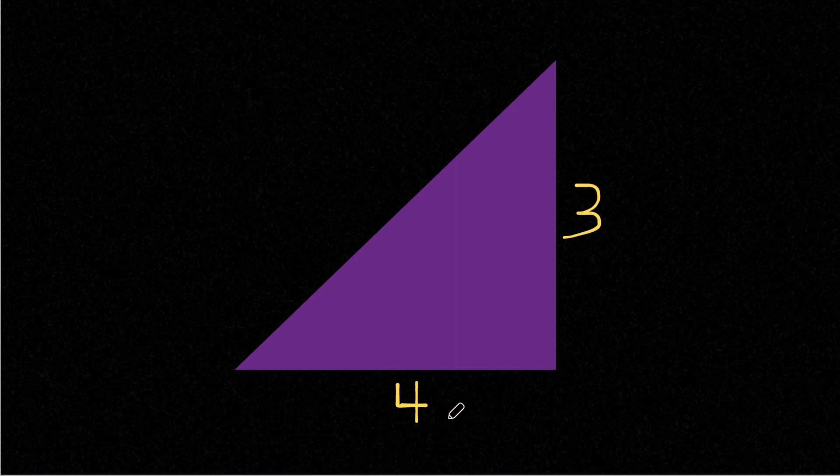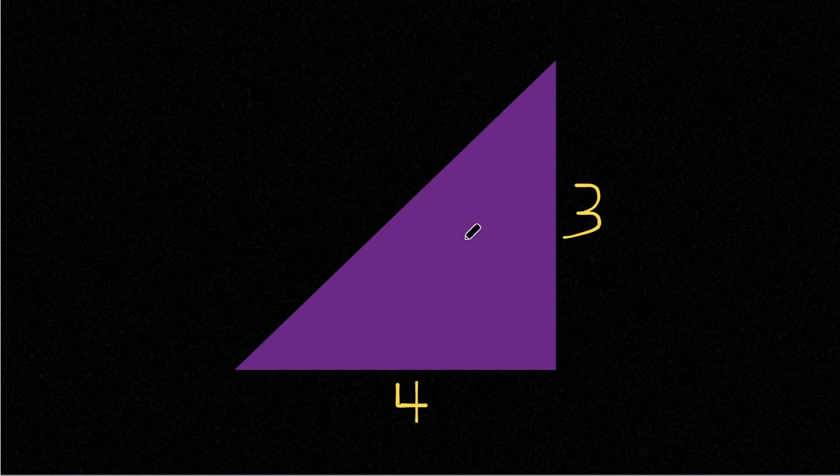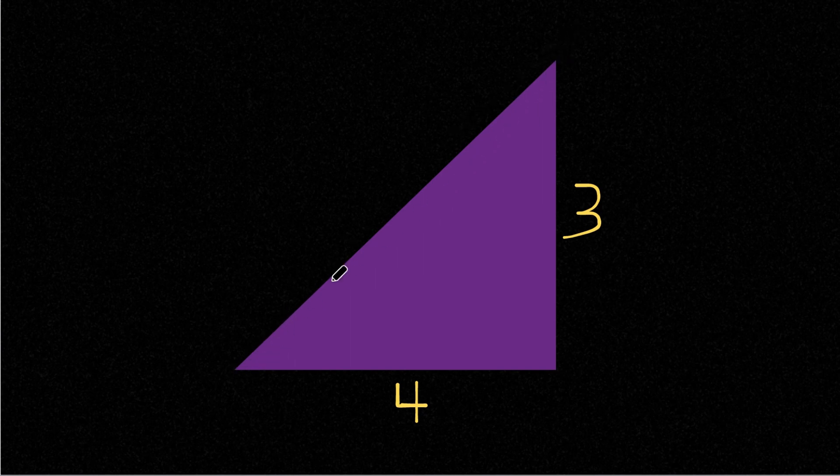As you can see here, we have our right triangle and we're actually missing the length of a side. This side, this is our longer side of our right triangle, and this side is known as the hypotenuse.